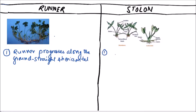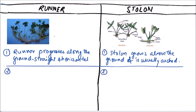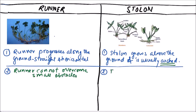The stolon grows above the ground and is usually arched. A runner cannot overcome small obstacles, but as the stolon is usually arched, it can overcome small obstacles.